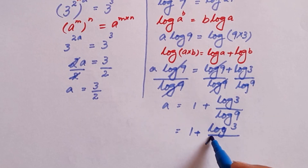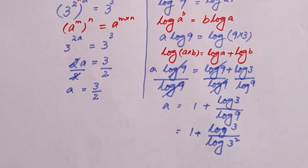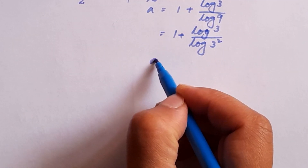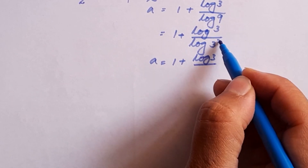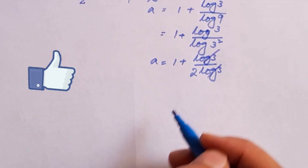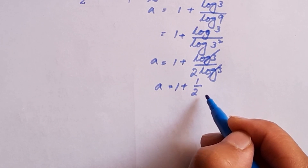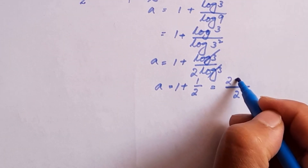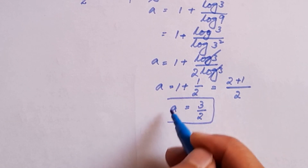We can write log 9 in the denominator as log(3 to the power 2), since 3 squared is 9. Applying the power rule, this becomes 2 log 3. The log 3 in the numerator and log 3 in the denominator cancel, leaving a equal to 1 plus 1 divided by 2. Taking LCM of 2, we get a equal to 3 by 2 — the same answer as method 1.